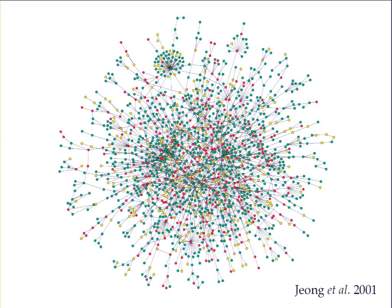What we are interested in is the bigger picture — what can you learn by looking at the network on a larger scale, not just at one node at a time. Just to give you a little story of why this is worthwhile: the World Wide Web is a network where nodes are web pages and edges are the hyperlinks between them. Those of you who are old-timers will remember when the web first came out, search engines like Lycos, AltaVista, or HotBot. They were terrible — they really did not work well.